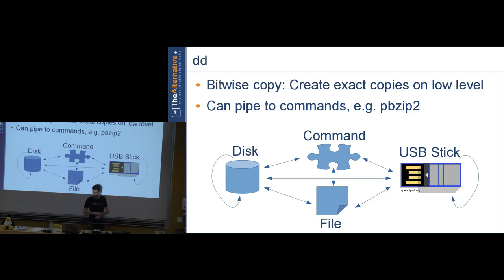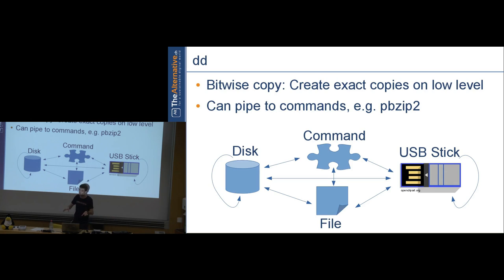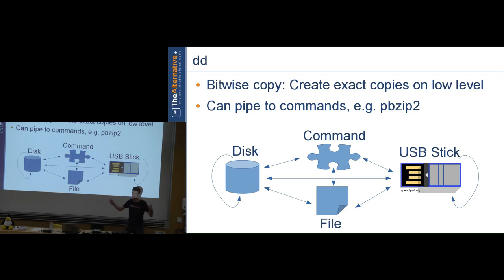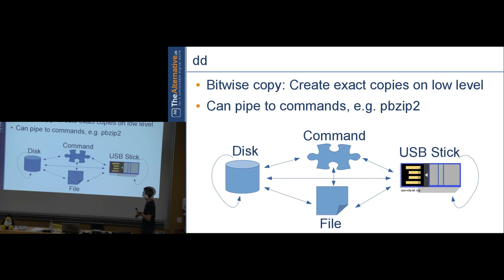dd — sometimes called 'disk destroy' — operates at the lowest level: ones and zeros, devices and partitions. It can copy data from disks, files, and USB sticks without caring what the data is. You can make an exact copy of a USB key to your hard drive, back up a partition to a file, or create an ISO from a CD — a perfect bit-for-bit copy.